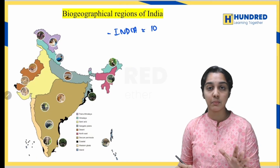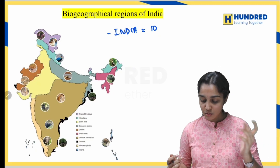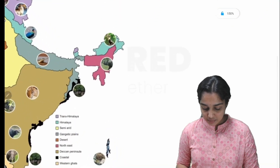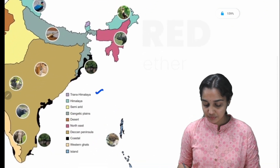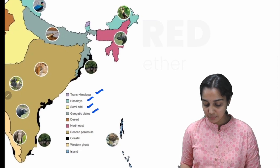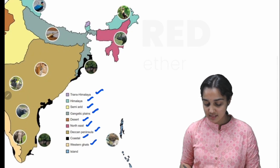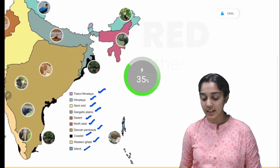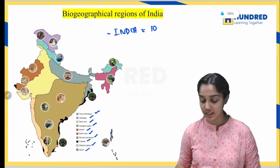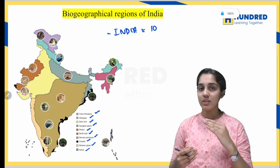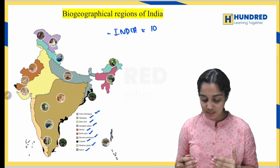India has 10 biogeographical zones. What are they? First is Trans Himalaya, then Himalaya, semi-arid zone, Gangetic plains, desert, northeast, Deccan peninsula, coastal zones, Western Ghats, and islands. These are the 10 zones of classification present in India.